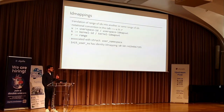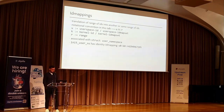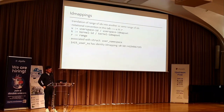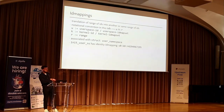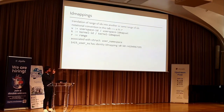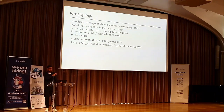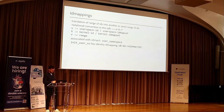We will prefix user space IDs with U and kernel IDs with K, and ranges with R, to make clear which direction we are going. The kernel ID is always created by an ID mapping, and such ID mappings are associated with struct user_namespace. The initial struct user_namespace is special — this is where you are located when you just interact with your host system. It always has the identity ID mapping: U0 to K0 for the full 32-bit range. So it maps 0 to 0, 1 to 1, 2 to 2, and so on.